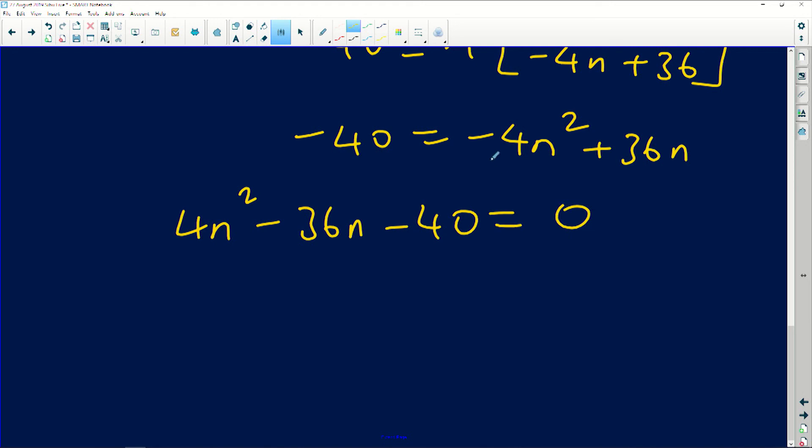Everything can be divided by 4 here, so I'm going to divide all of them by 4. I'll have n squared minus 9n minus 10 equals 0, which can be factorized to get the solution.